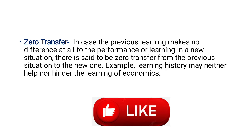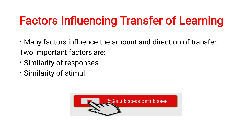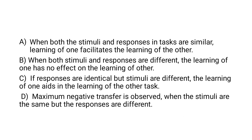What are the factors influencing transfer of learning? Many factors influence the amount and direction of transfer. Two important factors are similarity of responses and similarity of stimuli — either the stimuli or the responses should have some similarity. When both the stimuli and responses in tasks are similar, learning of one facilitates the learning of the other. When both stimuli and responses are different, the learning of one has no effect on the learning of the other. If responses are identical but stimuli are different, learning of one aids the other. Maximum negative transfer is observed when stimuli are the same but responses are different.